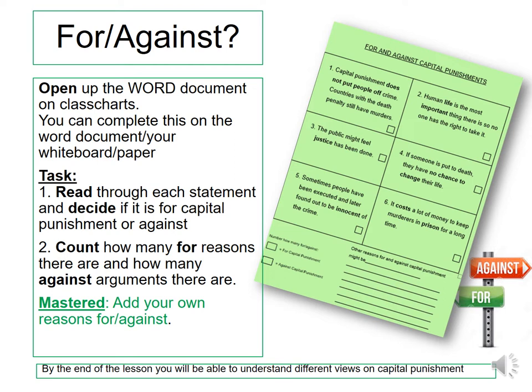I want you to read through each statement and decide whether it's for or against capital punishment. Once you have done that, count how many 'for' reasons there are and how many 'against' reasons there are. Your master task is to add your own reasons for and against.